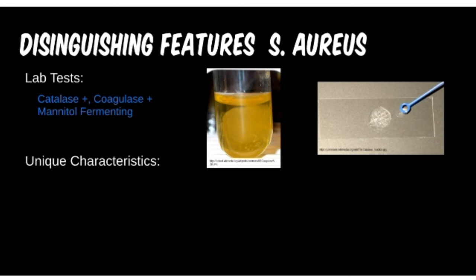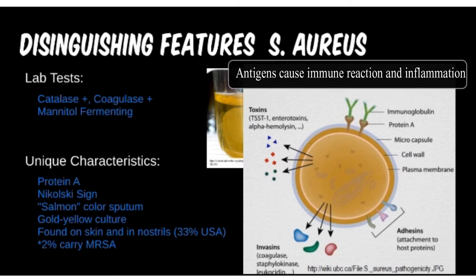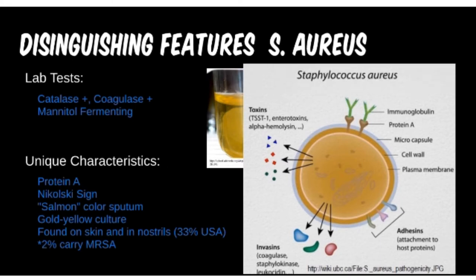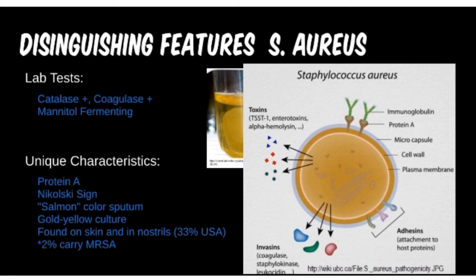Staph has enough odd ways to distinguish it from other bacteria. We talked about the Nikolsky sign seen in desquamation skin infections such as scalded skin and toxic shock syndrome, but the superantigen was not discussed. Protein A sets off an atomic bomb of inflammation within the body compared to other bacterial antigens — this is why such a severe reaction can be seen. Specifically, protein A is a C3b inhibitor and binds to the Fc portion of immunoglobulins. For testing questions, if you ever see salmon-colored sputum mentioned, think about this bacteria.